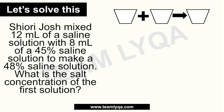Ang idea is that yung unang hinahalo — so whatever this is, siya ito — tapos yung pangalawa na ihahalo sa kanya, ito namang 8 ml of a 45% saline solution, siya naman yung pangalawang bucket. At yung magiging resulta nila, yung kalalabasan nila — yun naman yung 48% saline solution — siya naman yung bucket number 3. Ano lang gagawin natin ngayon? Ilalagay lang natin lahat ng information na binigay dun sa problem. Simulan natin dun sa 12 ml — ibig sabihin yun, yung unang hinalo, ang dami niya ay 12 ml.